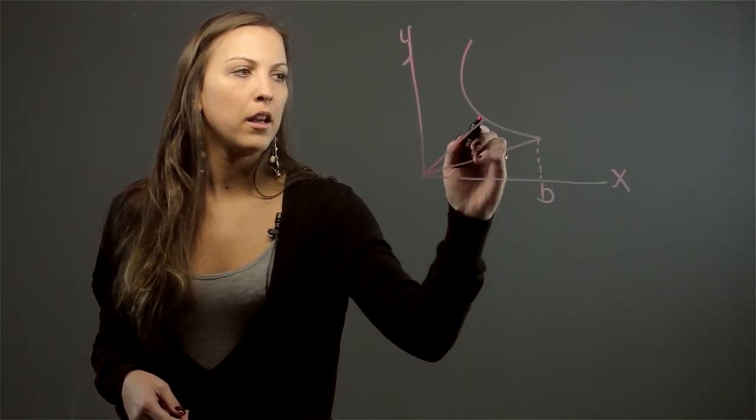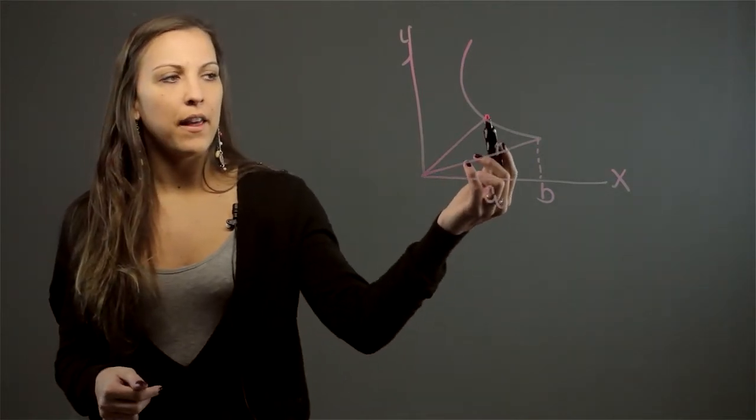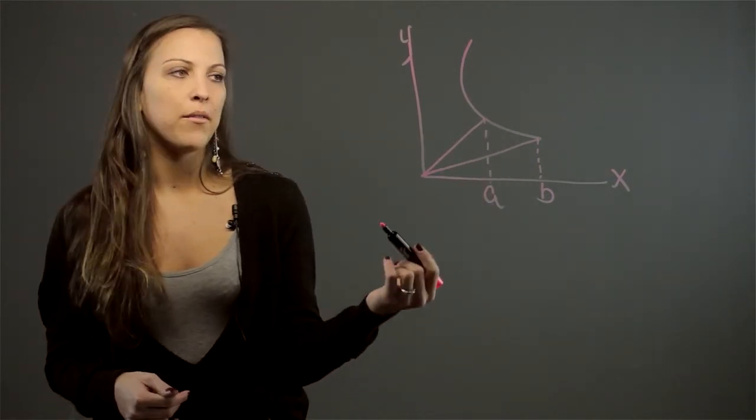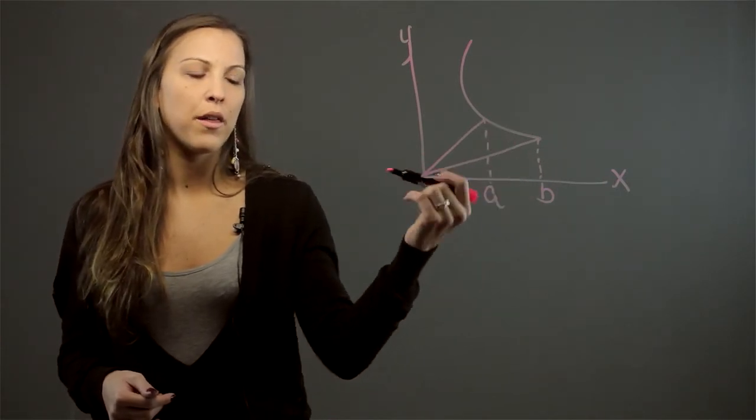And we're going to call this point B and the second one A. So I can't find the area of the hyperbolic angle, but I can find the area of the hyperbolic sector, which is this portion that's formed right here with three boundaries.